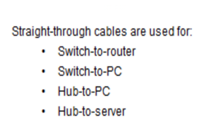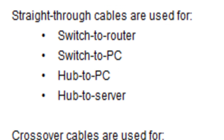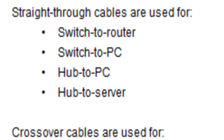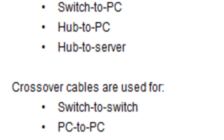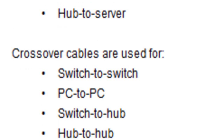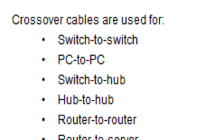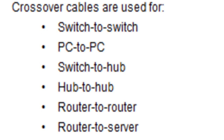Straight-through cables are used for switch-to-router, switch-to-PC, hub-to-PC, and hub-to-server connections. Crossover cables are used for switch-to-switch, PC-to-PC, switch-to-hub, hub-to-hub, router-to-router, and router-to-server connections.